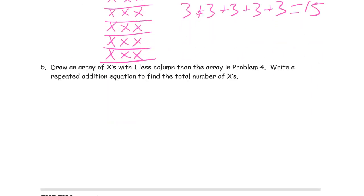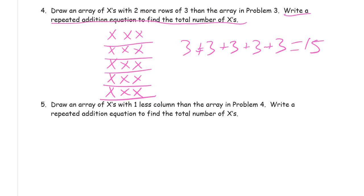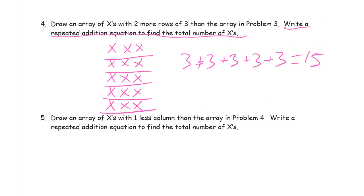Draw an array of X's with one less column than the array in problem four. So that's the array in problem four. I'm going to redraw the same array but without one of the columns. All right. So it's going to have two columns and it's going to have five in each column, right?